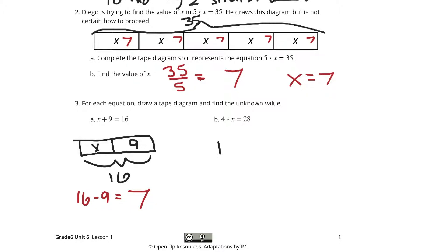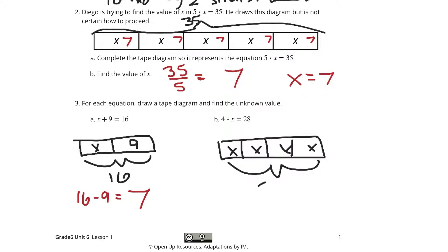Then we have 4 times x equals 28. That means 4 equal sections of x are going to be worth 28. So this time if we take our 28 and divide it by 4, we're going to get 7. So x is 7 in both of these.